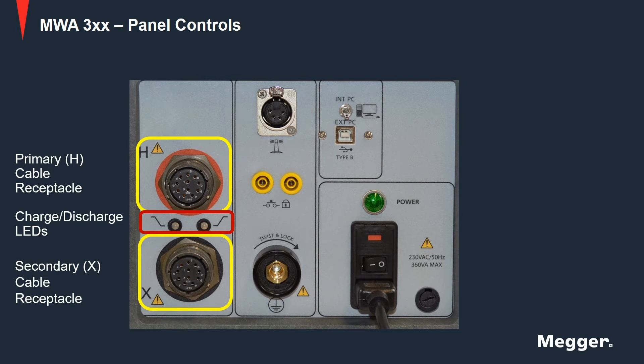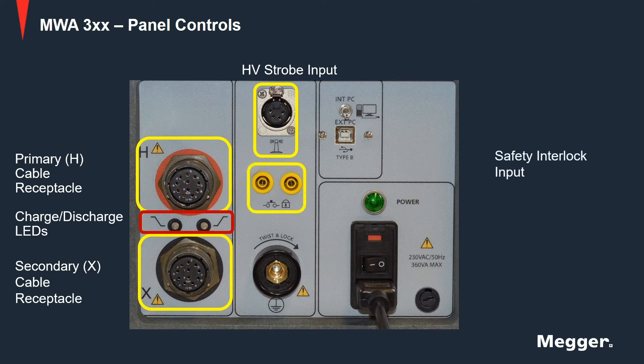Next, you have the high voltage strobe input connector to provide visible indication of the test voltage or test current being applied. Then, you have the safety interlocked input that is used when there is a requirement for additional safety while testing a transformer. Further, you have the ground lug to allow connection to station earth.